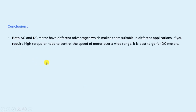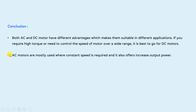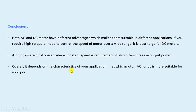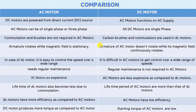Overall, both AC and DC motors have different advantages which make them suitable in different applications. If you require a high torque or need to control the speed of a motor over a wide range, it is best to go for a DC motor. Whereas AC motors are mostly used when constant speed is required and they also offer a large output power. This is the comparison of AC and DC motors in tabular form, summarizing all the points discussed in this video.